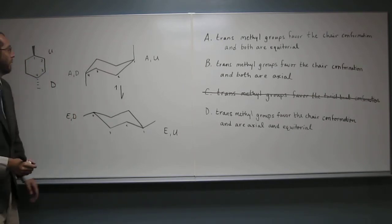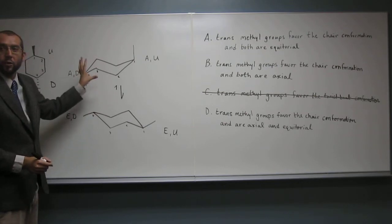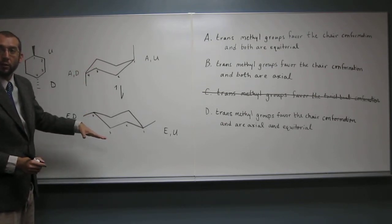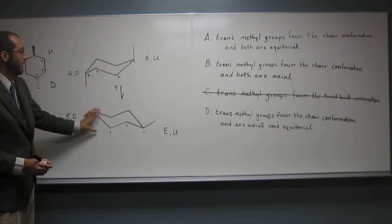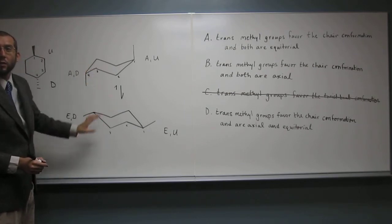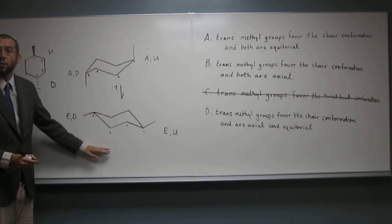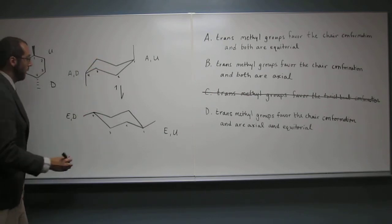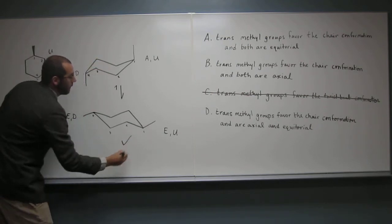Okay, wonderful. So which one of these is, so remember, chair is the lowest energy conformation, right? And which one of these two chair conformations is going to be lower in energy? The one where there's 2 equatorial or 2 axial? 2 equatorial, so this one's down here.